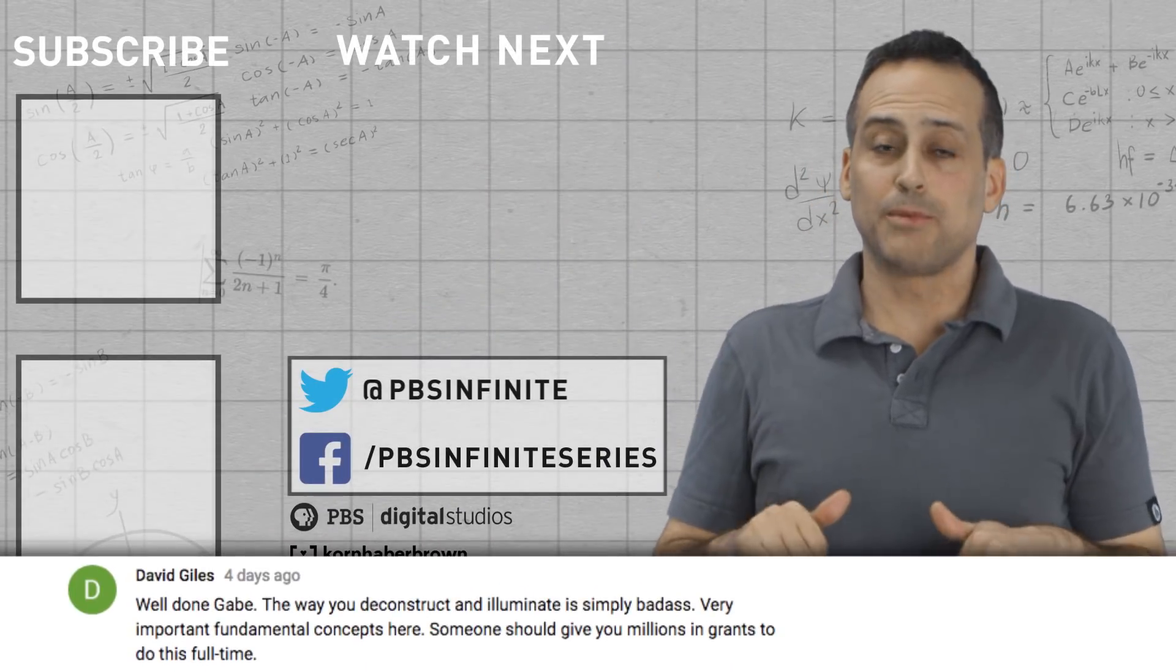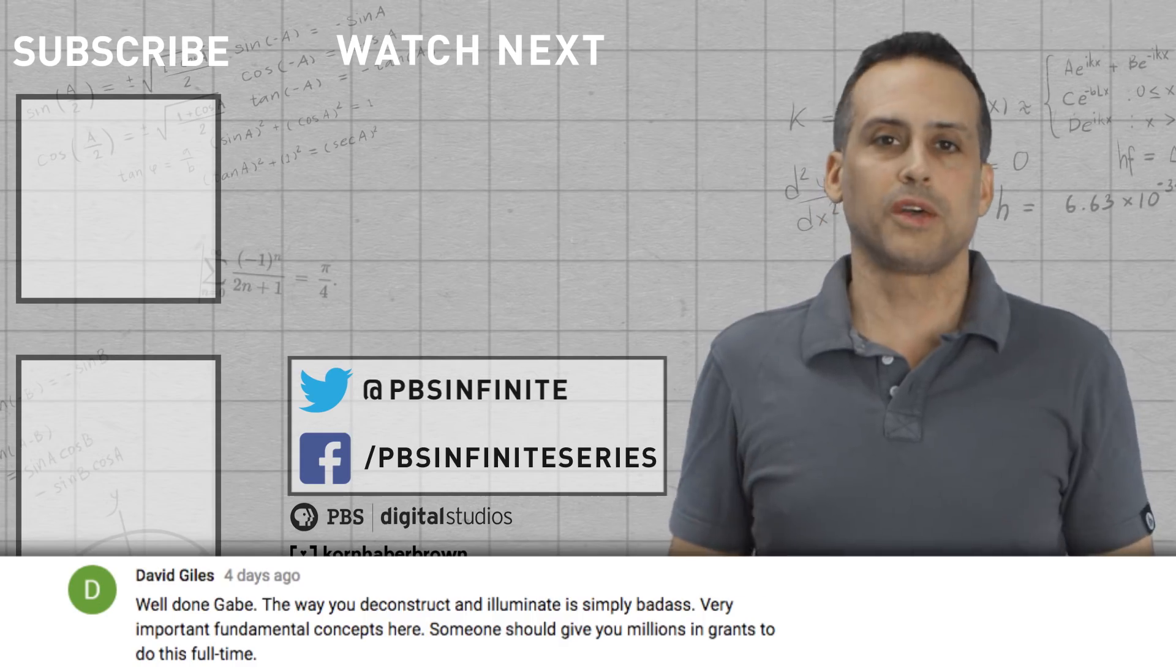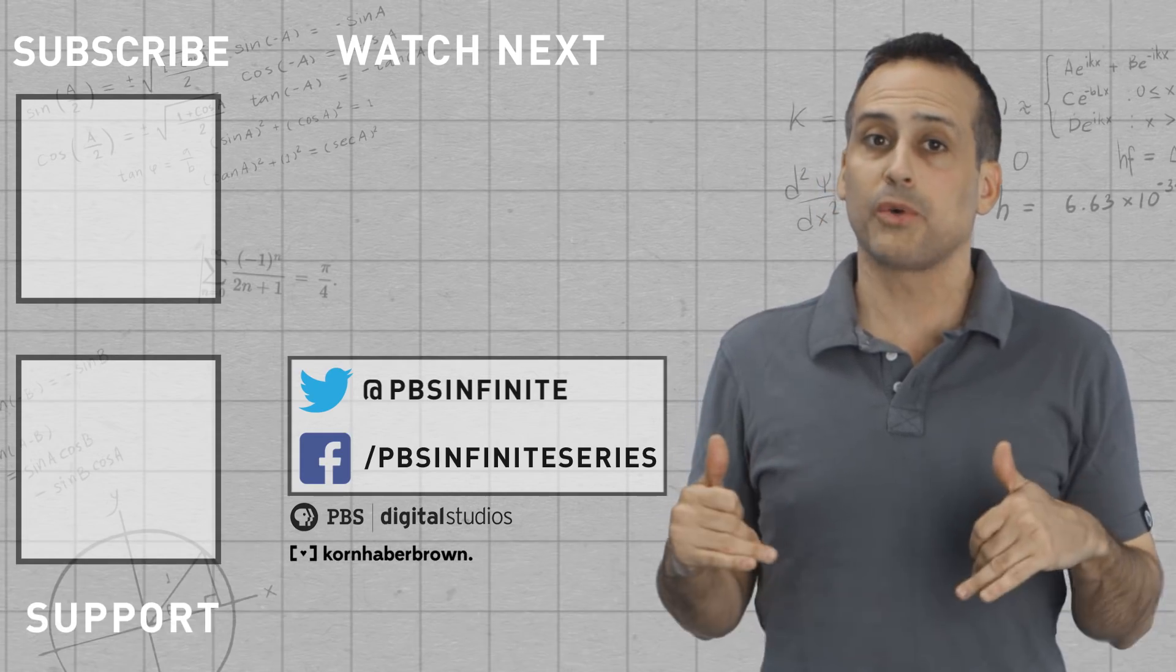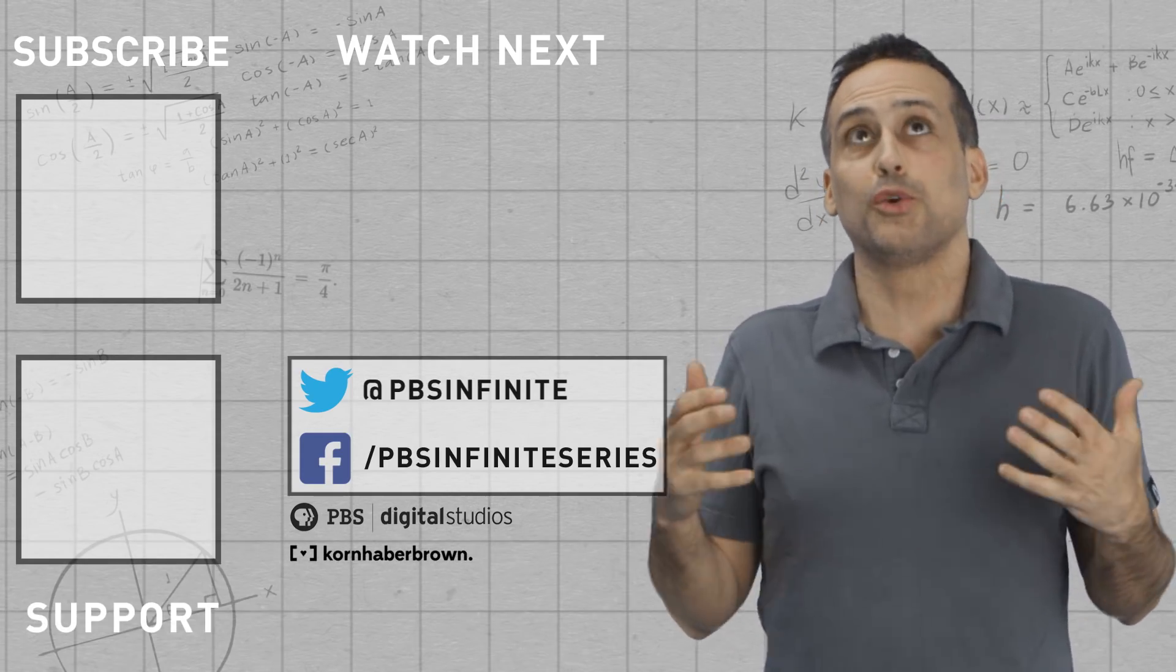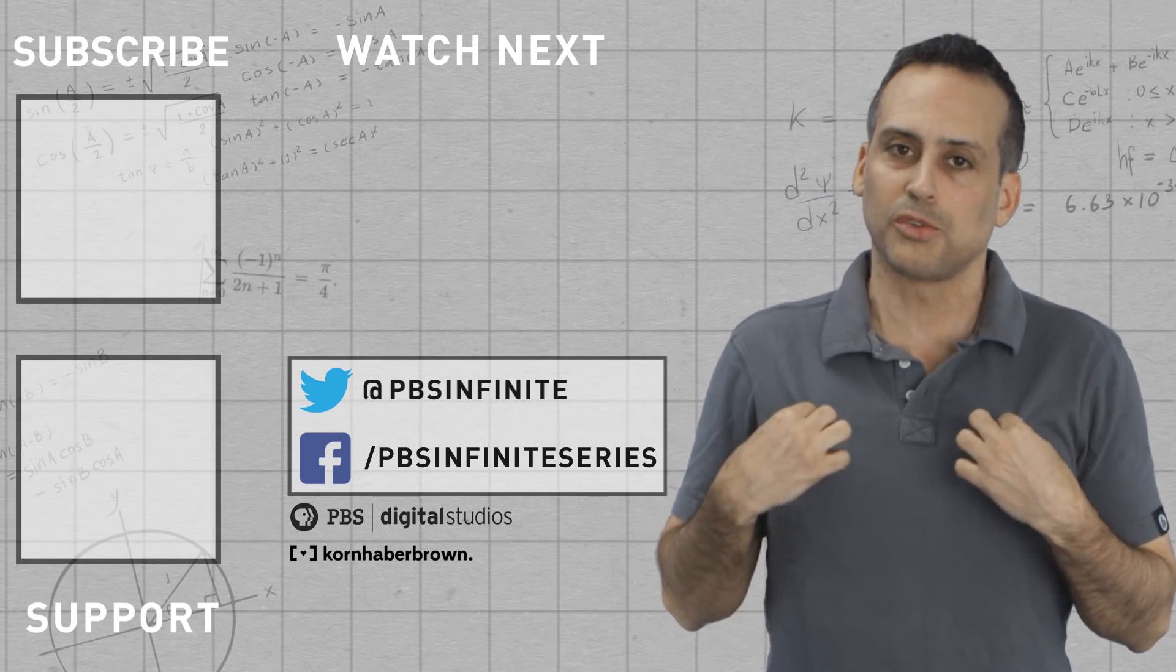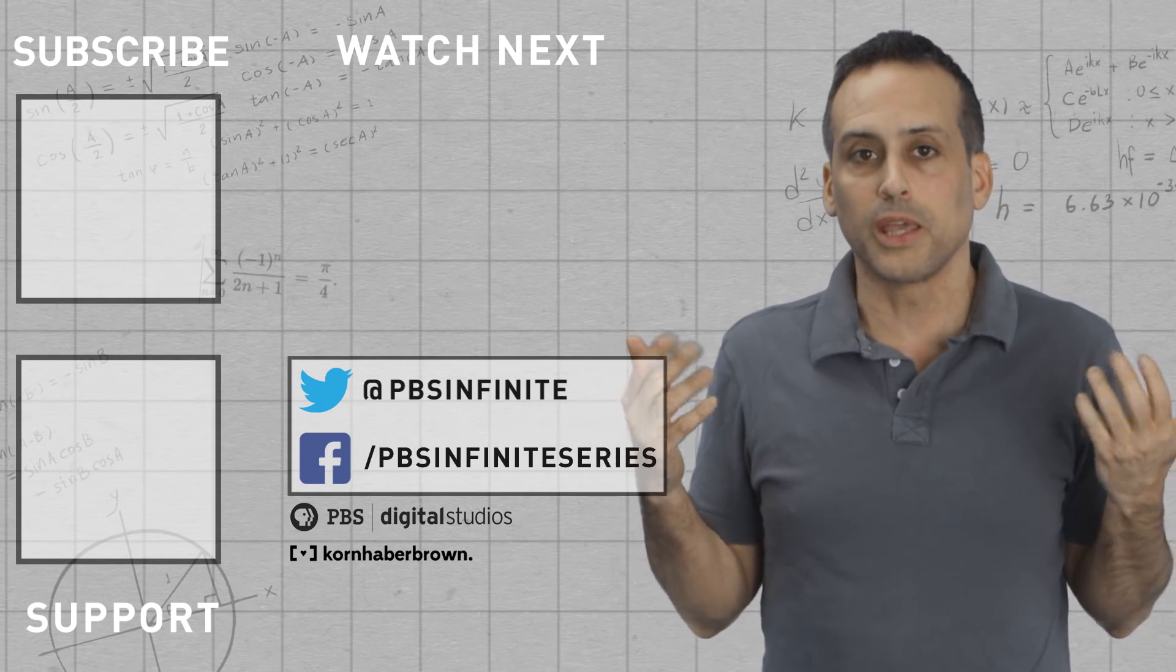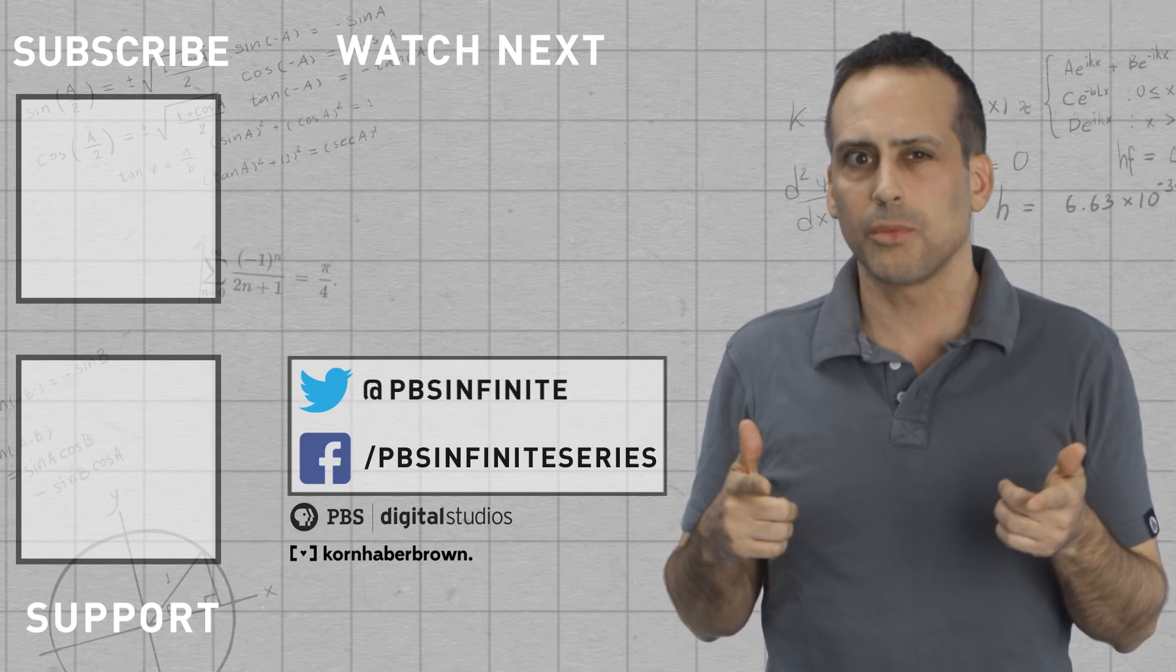Finally, David Giles said that Gabe should be given a million bucks to do this YouTube stuff full-time. I agree. Now, I already get a huge pile of cash, which is why my clothes look so nice. But another million wouldn't hurt. So Elon Musk, you watching? Know what I'm saying?